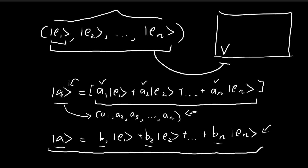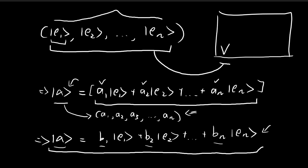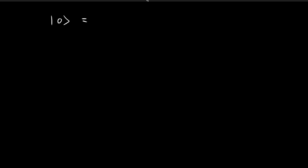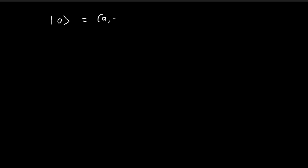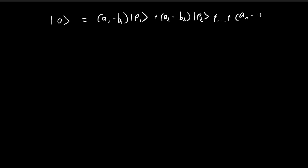The first step is to take the two expressions and subtract them from each other. On the left-hand side, we have the same vectors subtracting each other, so we get the null vector. On the right-hand side, we have a1 minus b1 times e1, plus a2 minus b2 times e2, and so on all the way to an minus bn.